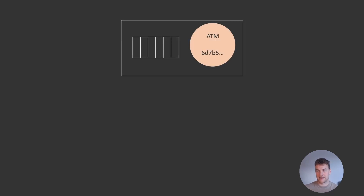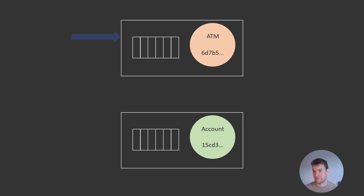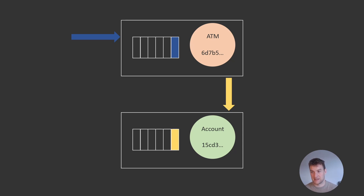For example, say we have an ATM grain — represented as a dot with a message queue in front of it — and we also have an account grain. If a client calls the ATM grain to invoke a method like debit, that pushes a message onto the grain queue. If in the course of processing that message the ATM grain then wants to communicate with the account grain to check the balance, that posts a message onto the account grain which then begins to process. Once finished, the account grain returns to the ATM grain, which can then finish and return to the client.